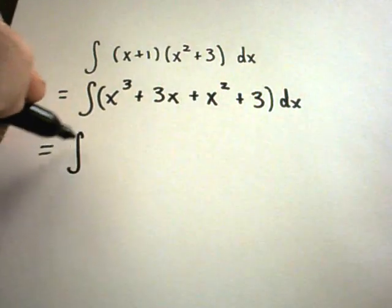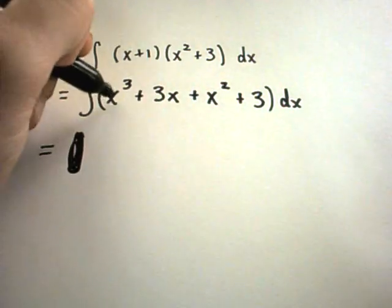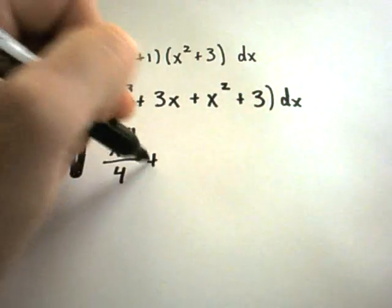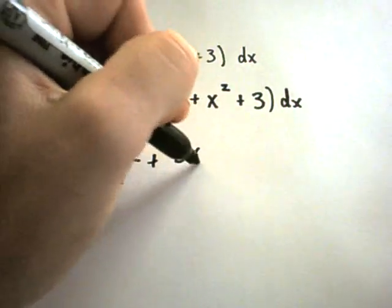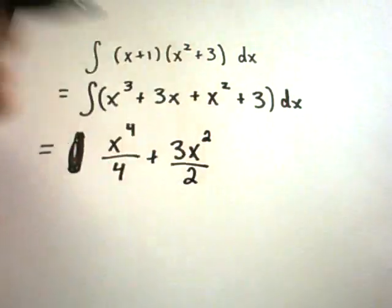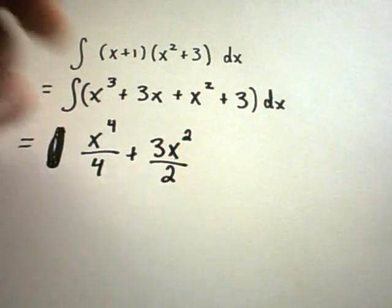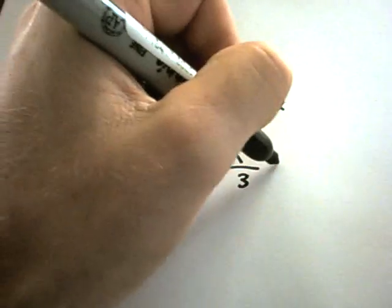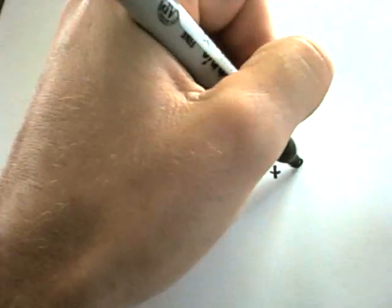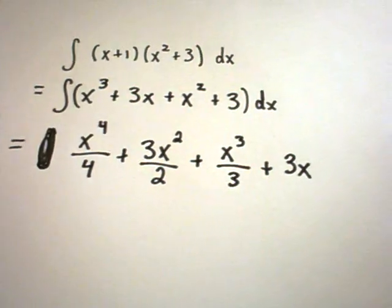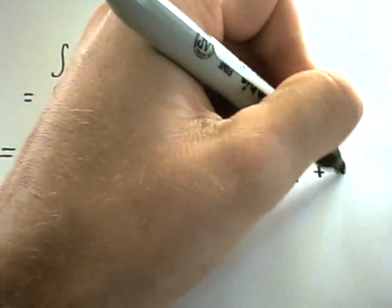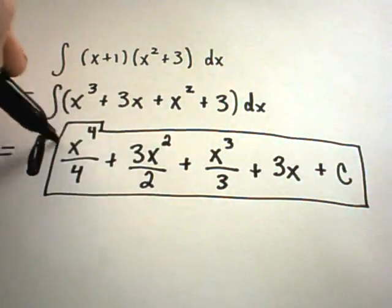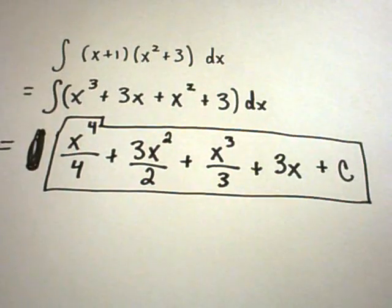Integrating term by term: the anti-derivative of x to the third is x to the fourth over 4; the anti-derivative of x squared is x cubed over 3; the anti-derivative of 3x is 3x squared over 2 — wait, more carefully: anti-derivative of x to the first is x squared over 2, using the property of adding 1 and dividing by the new number; x to the third over 3; anti-derivative of 3 is 3x; plus c. There is your anti-derivative of the original problem.